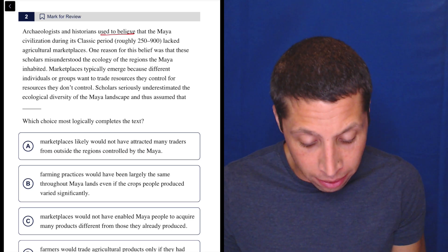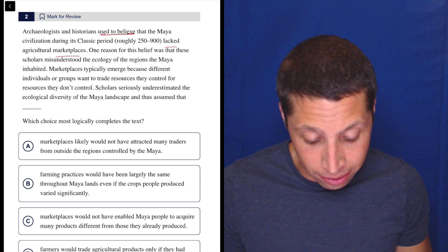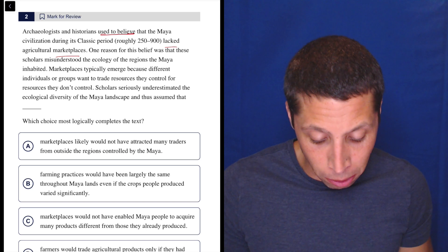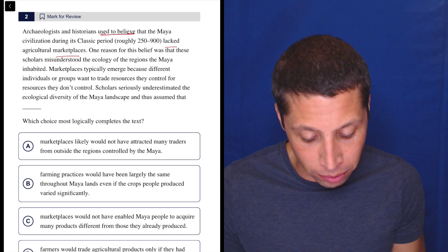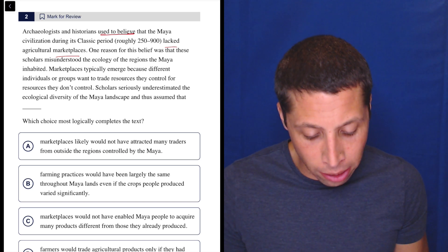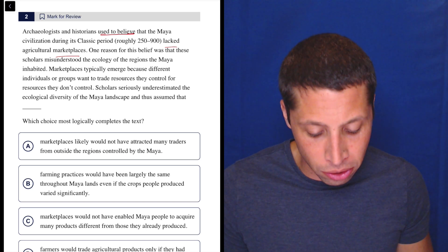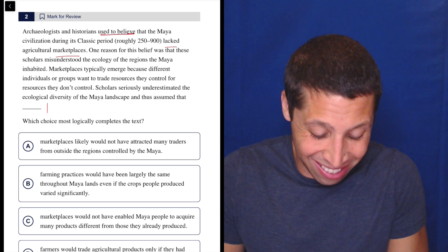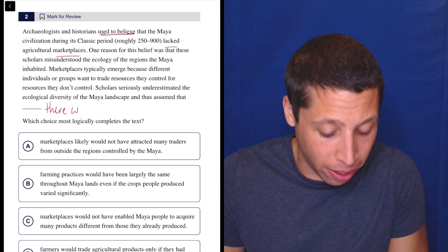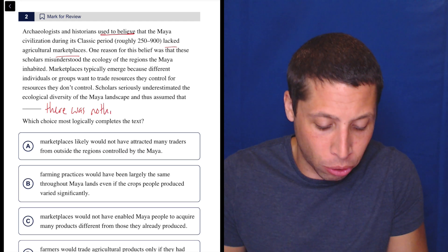They believed that they lacked marketplaces. The ecology - marketplaces typically emerge because different individuals want to trade resources they control. So scholars seriously underestimated the ecological diversity and thus assumed that there was nothing to trade or something. There was nothing to trade.